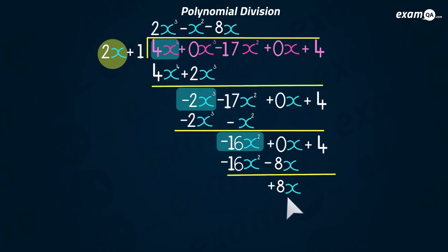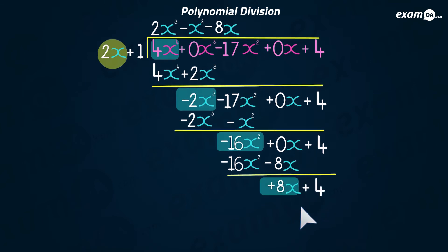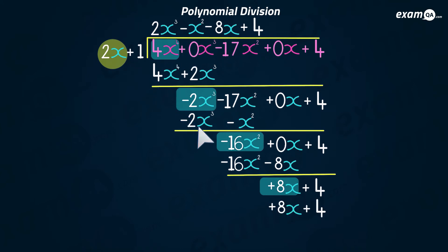We go again, this time looking at the 8x. To get from 2x to 8x, you multiply by 4. Next, multiply the 4 out to the 2x plus 1, then do the subtraction — and we get zero. So it goes in exactly again. Definitely have a rewind and look at that again.